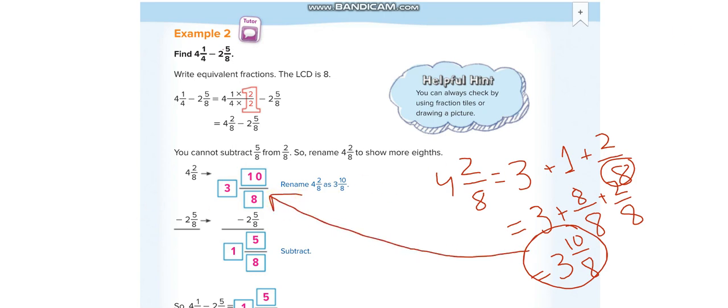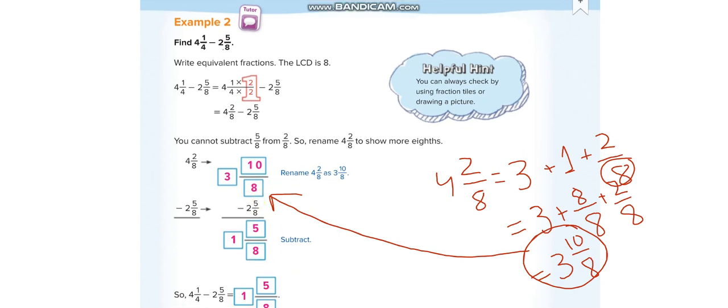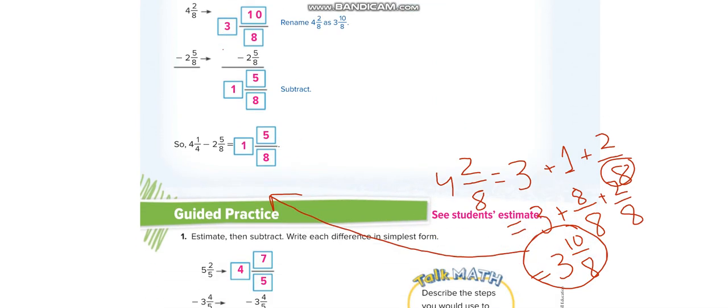Then what we will do? We will minus it. 3 minus 2 is 1. 10 minus 5 is 5, and the denominator stays the same. Now let us move to the next question.